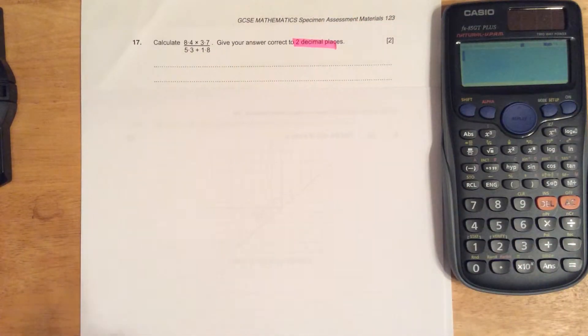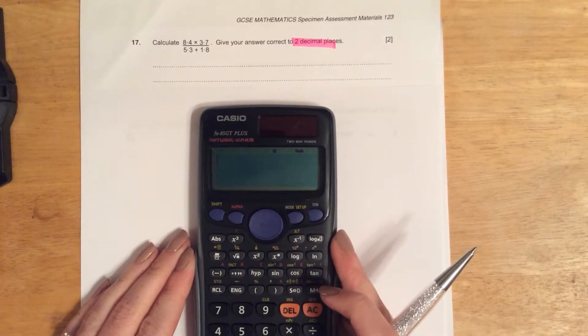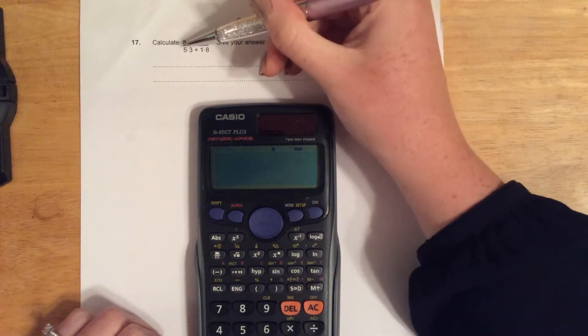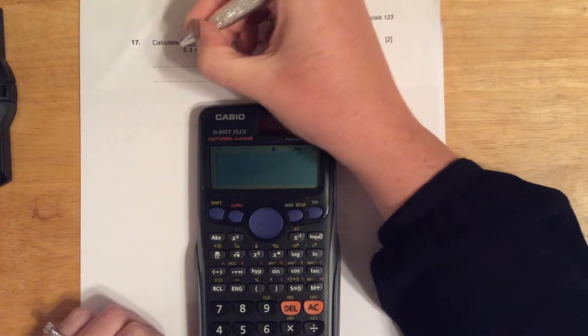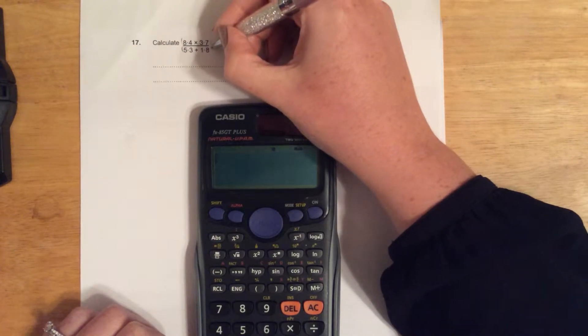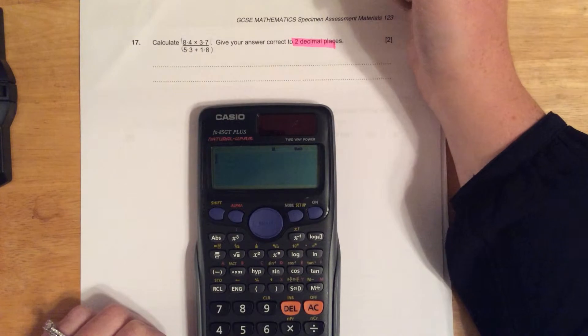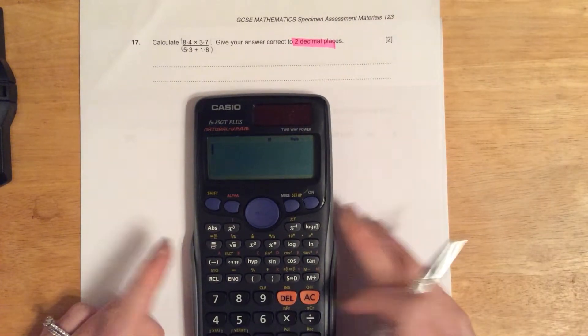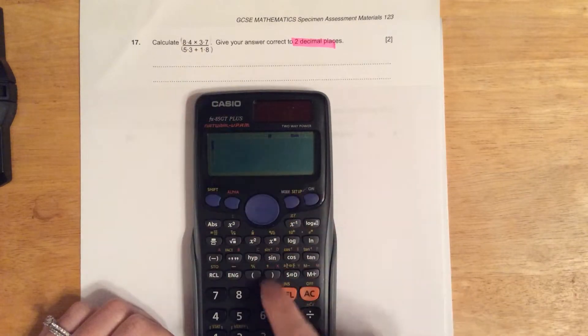When typing this into the calculator, I need to remember to put brackets around what's on the top and what's on the bottom. We know that this line means divide. If you're using the usual calculators we use in school, I would type bracket 8.4 times 3.7 close bracket.